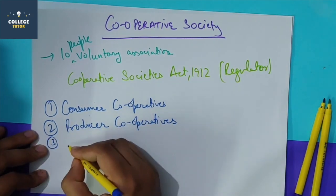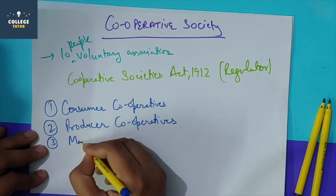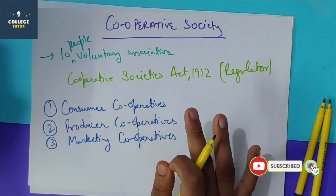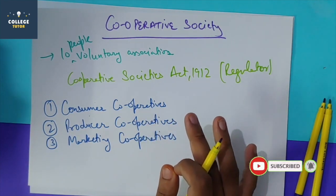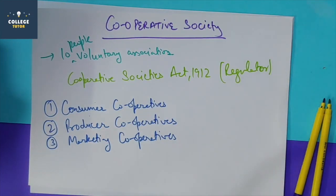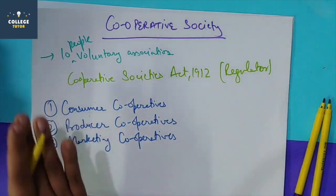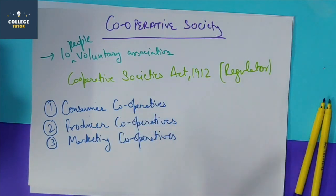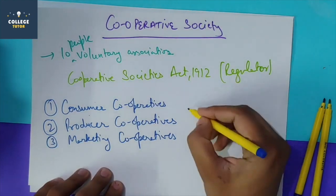The third type is marketing cooperatives. In marketing cooperatives, the main objective is to eliminate the middlemen, because middlemen increase costs and reduce the profit for sellers. Basically, the society directly markets the product and sells it without a long chain of intermediaries. You can see various examples of this.